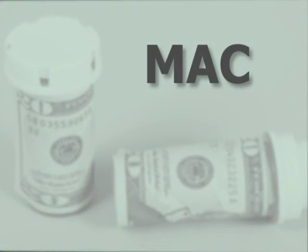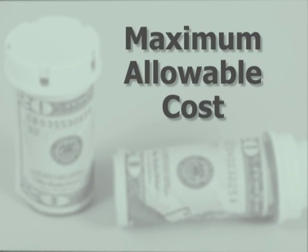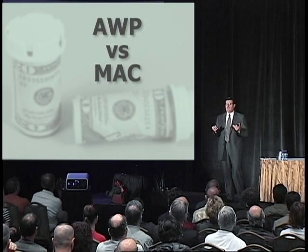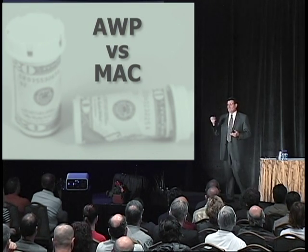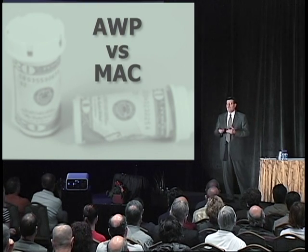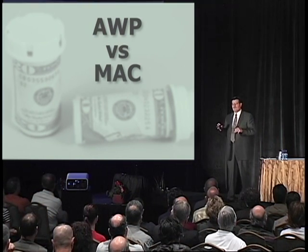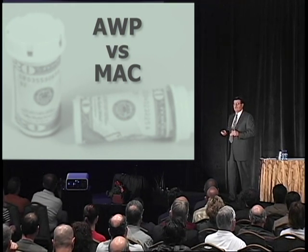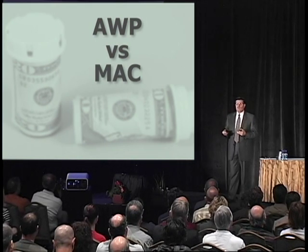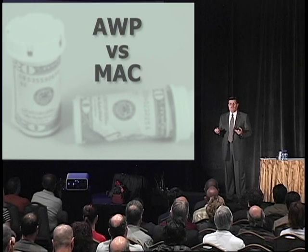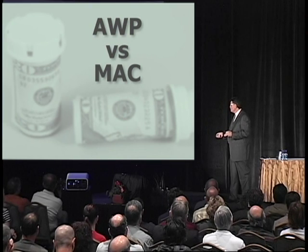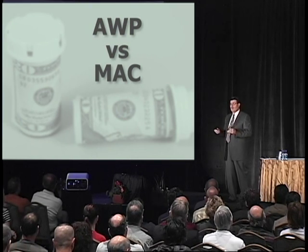On the other side we have MAC, or maximum allowable cost. Because AWP, or average wholesale price, was not an accurate number for generic drugs — you might have five generic drugs that had the same MAC, and one cost five dollars a hundred, one ten, one twenty, one fifty, and one seventy-five. Payers, whether employers, insurance companies, or Medicaid programs, whoever paid for prescription drugs, finally concluded they can't really use AWP in generic drugs. There's no relevance there.